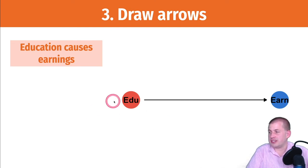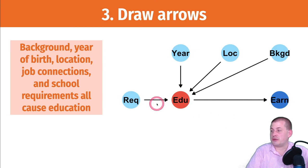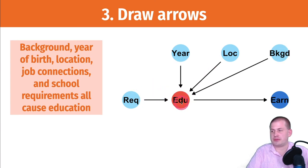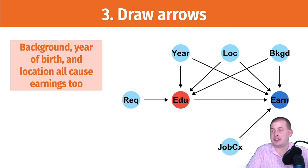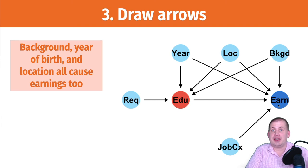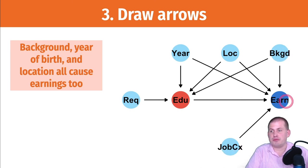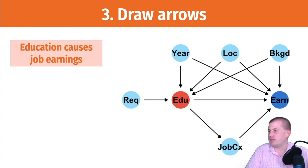Step three: connecting arrows. Education causes earnings — that's our main question. Then we add the other variables: required education causes you to get education; the year you're born causes education; location causes education; background causes education. We also connect: year of birth causes earnings (recessions); location causes earnings; background causes earnings; job connections cause earnings because a greater social network creates better opportunities. And education causes job connections, which then cause earnings.